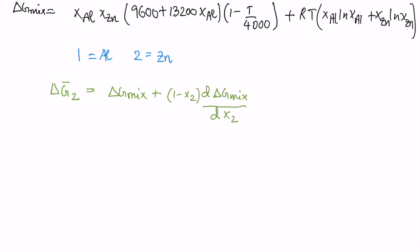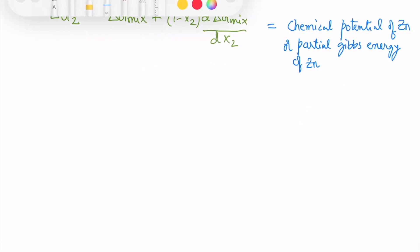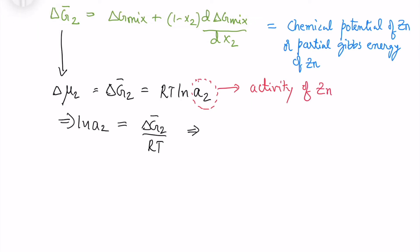So we know the equation from Gibbs-Duhem equation that partial Gibbs free energy of zinc is nothing but delta G mix plus 1 minus x2 into d delta G mix by d x2. And also we know that partial Gibbs free energy is the chemical potential that is equal to the RT ln of activity. So from there we will find the activity.